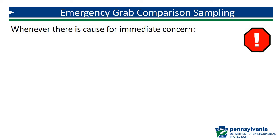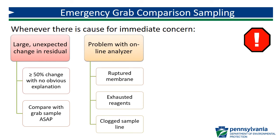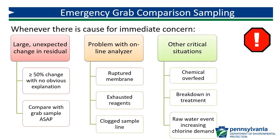Emergency comparative grab samples are collected when an online analyzer is providing measurements that are cause for immediate concern and should be collected as soon as possible. For example, if an analyzer is indicating a large unexpected change in residual, a deviation of 50% or more from routine observed residuals could be an indicator of a major issue. Drift of this nature may be indicative of an issue with the analyzer itself — a ruptured membrane, depleted reagent, or clogged sample lines can have a significant impact on analyzer operation and accuracy. If the analyzer is functioning properly, significant changes in residual may be a symptom of a critical situation related to plant operation, such as a chemical overfeed, breakdown in treatment, or increased chlorine demand due to a raw water event.